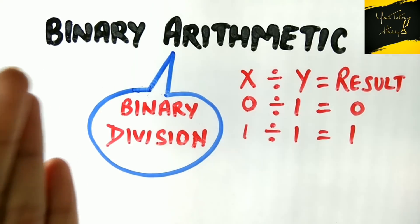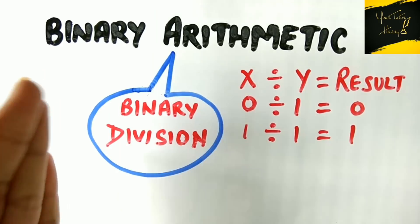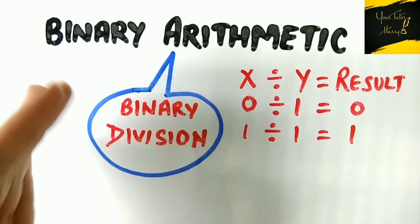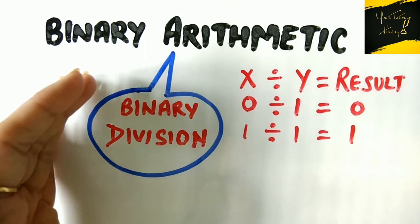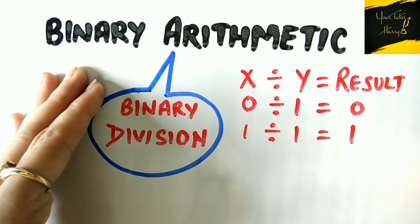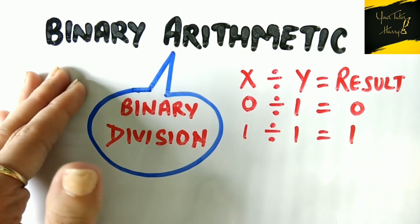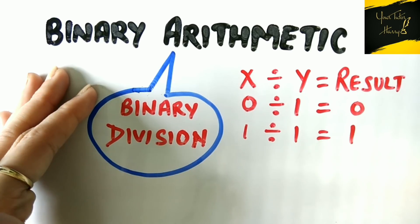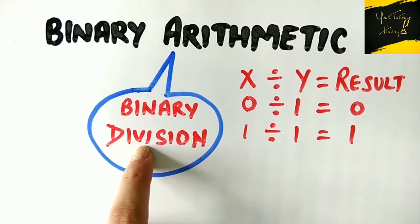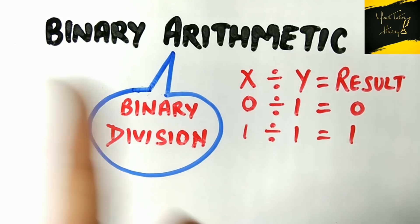Whenever we perform any arithmetic operation on binary numbers, the result also comes in the form of zeros and ones. For a detailed understanding about addition, subtraction, or multiplication, kindly have a look at my other video — I am giving a link in the description. So friends, without wasting much time, let's start with the topic of binary division.